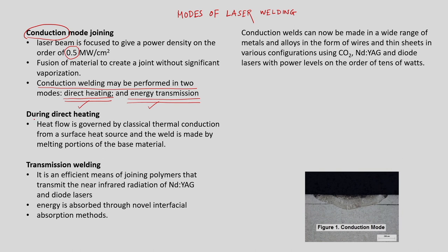In direct heating, we are using classical thermal conduction from a surface heat source to generate the weldment. Simply, you apply the heat energy on the surface, get it conducted by the material's natural thermal conductivity, and then generate the weldment — that is direct heating.